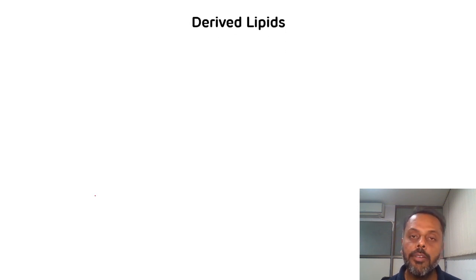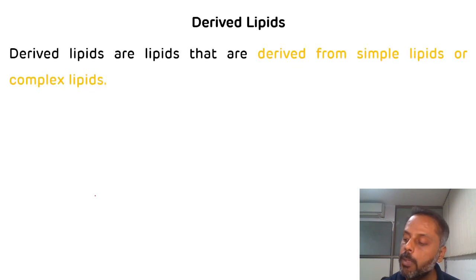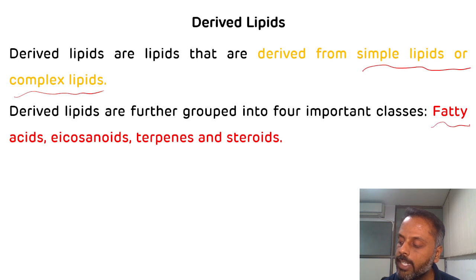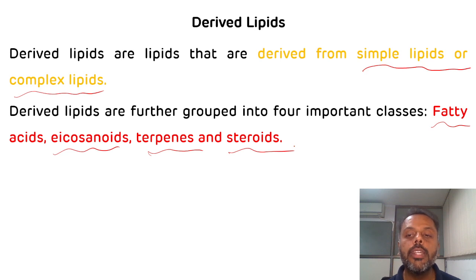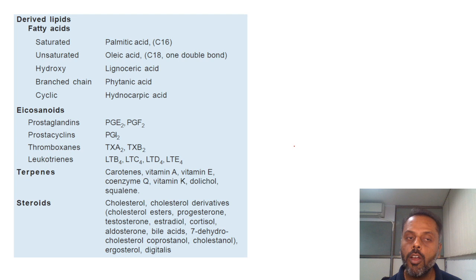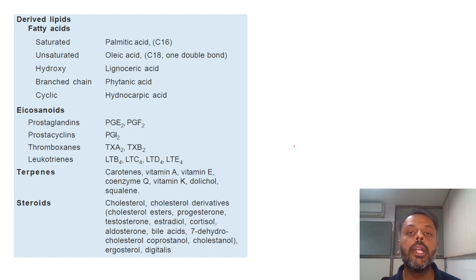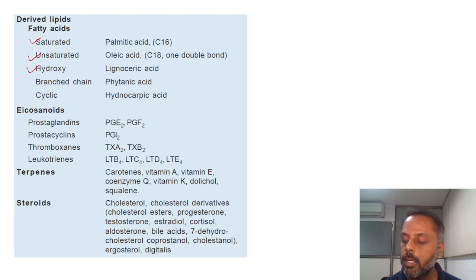Now we will see derived lipids. Derived lipids are those lipids which are derived from simple lipids or complex lipids. Examples of derived lipids are fatty acids, eicosanoids, terpenes, and steroids. Fatty acids are carboxylic acids with a hydrocarbon chain and are classified into five types depending upon their structure: saturated fatty acid, unsaturated fatty acid, hydroxy fatty acid, branched fatty acid, and cyclic fatty acid.